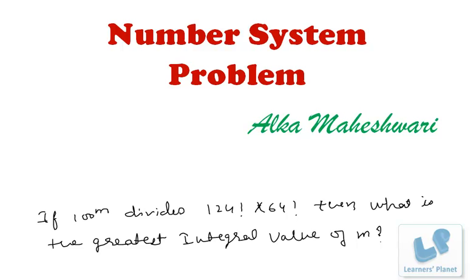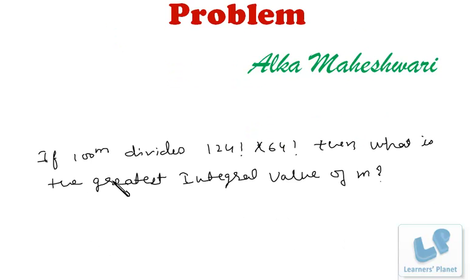Hello friends. In this session I am solving a query sent by a student. The problem is based on number systems: if 100 raised to m divides 124 factorial times 64 factorial, then what is the greatest integral value of m? To understand this problem you should have attended the basic number system session where the basics of this sort of problem have already been explained.